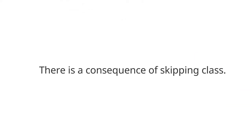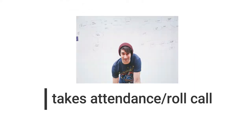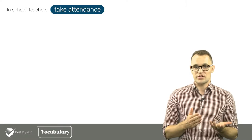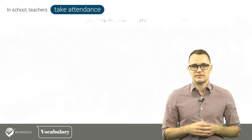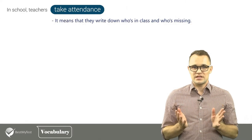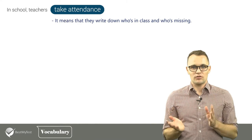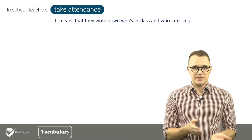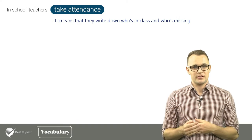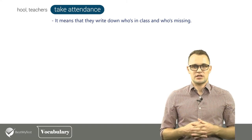There is a consequence of skipping classes. Usually a professor takes attendance or roll call. In school, teachers take attendance, which means that they write down who is in class and who is missing. Look at this example conversation.